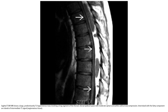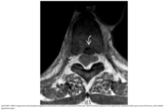T1WI shows a large predominantly T1-hyperintense mass involving long segments of the thoracic dorsal epidural space with moderate spinal cord compression, intermixed with the fatty component and areas of intermediate T1 signal representing the angiomatous tissue. T1WI with contrast of a large thoracic dorsal epidural angiolipoma demonstrates cord compression.